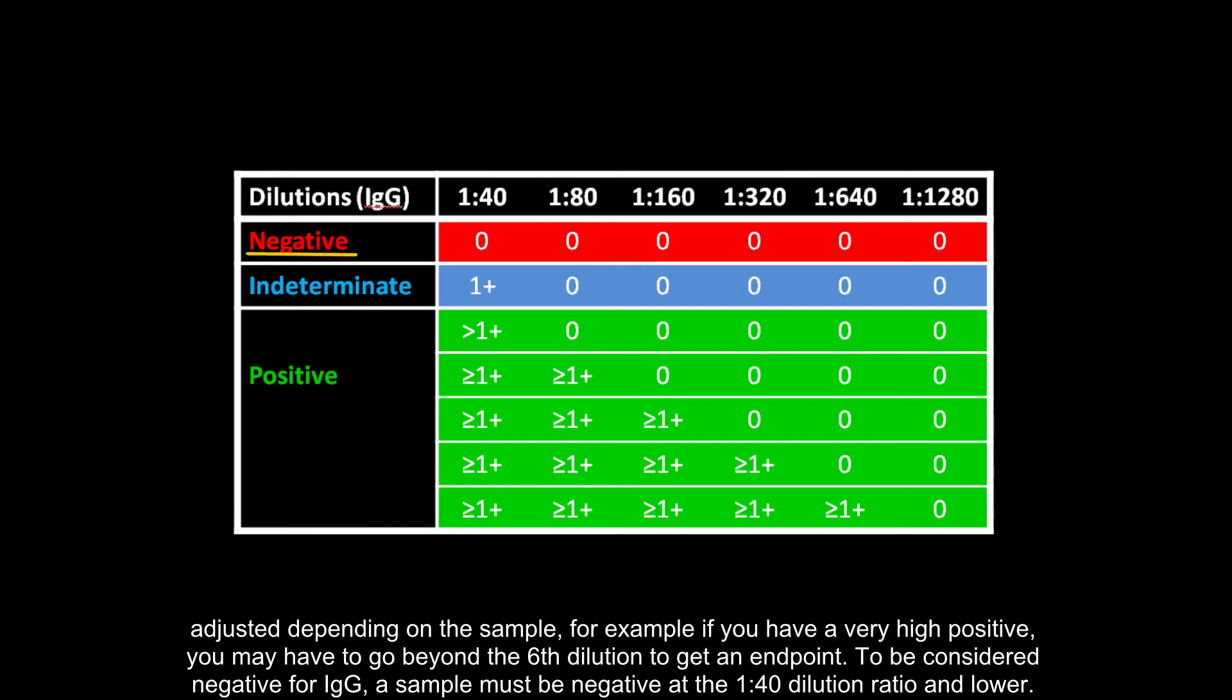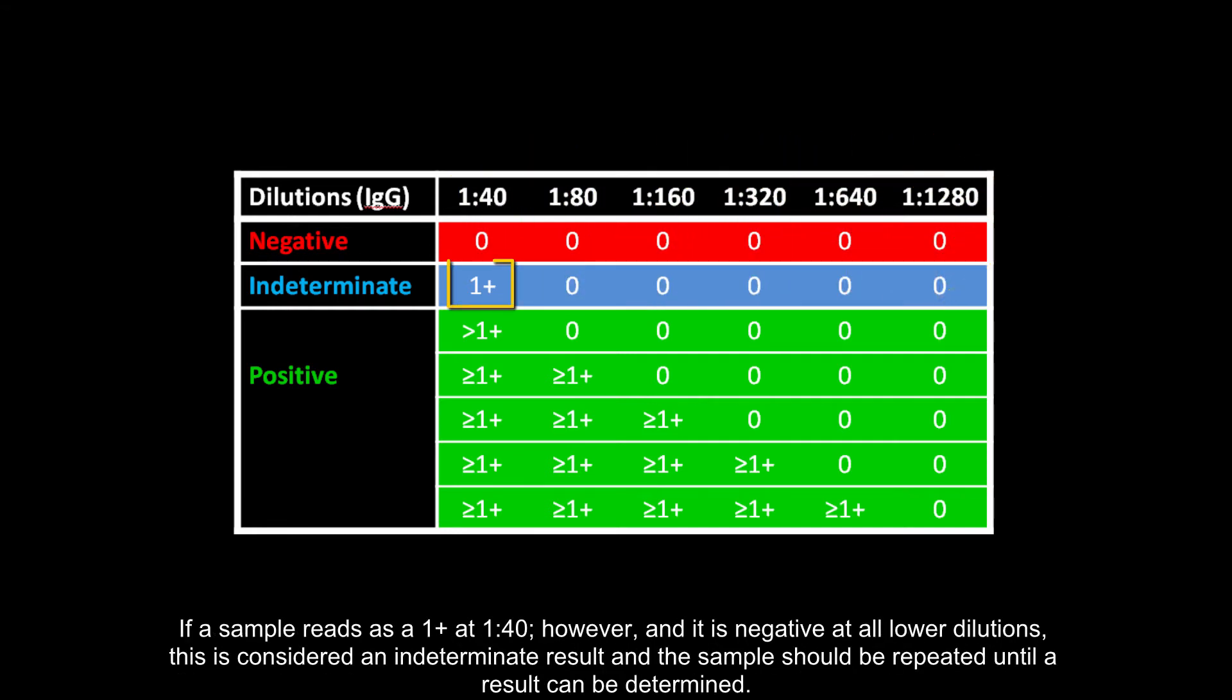To be considered negative for IgG, a sample must be negative at the 1 to 40 dilution ratio and lower. If a sample reads as a 1 plus at 1 to 40 and it is negative at all lower dilutions, this is considered an indeterminate result, and the sample should be repeated until a result can be determined.